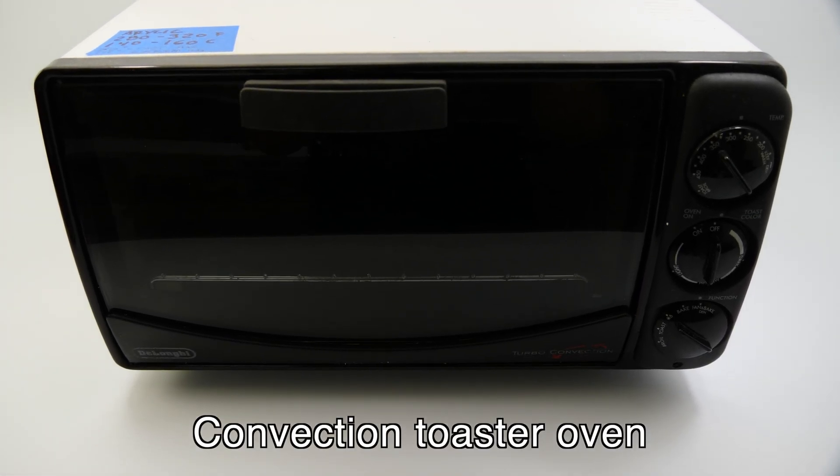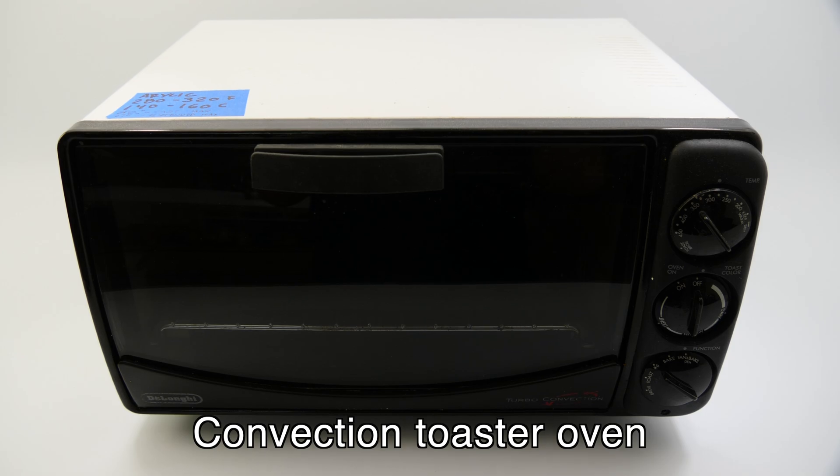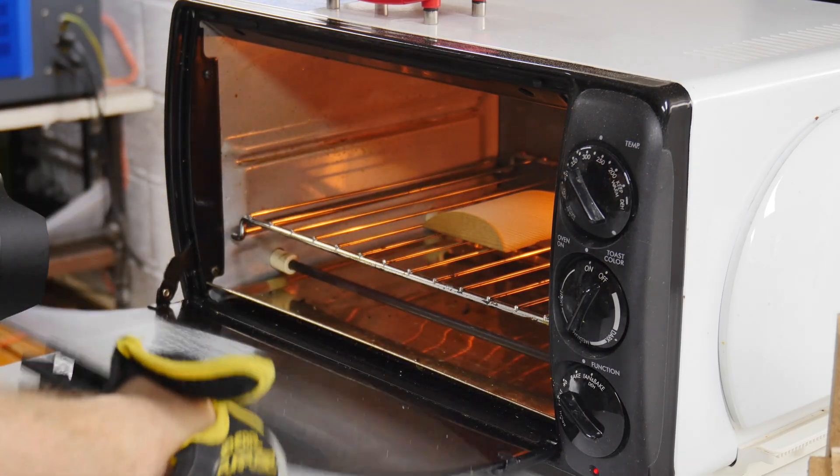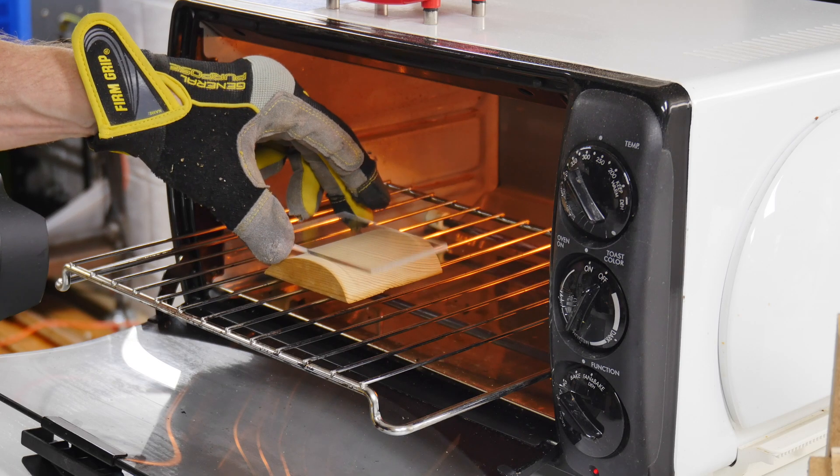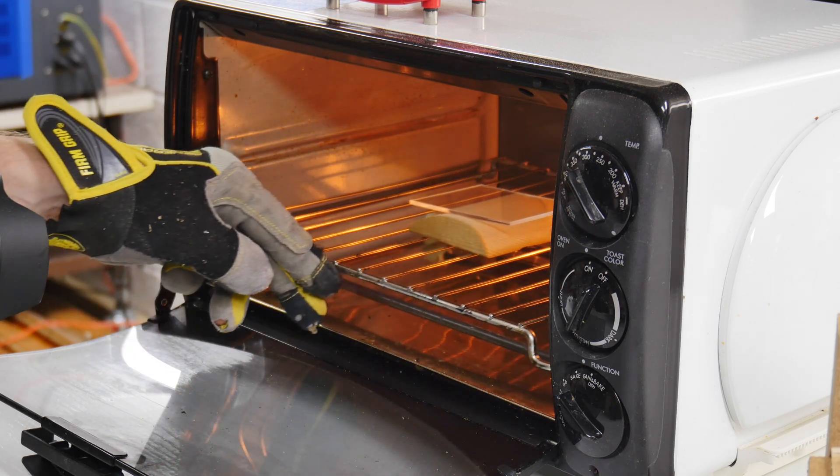This is my Delonghi convection toaster oven. Its sole purpose is to heat shit up. In this case, we're going to heat up a piece of acrylic and try to drape form it.